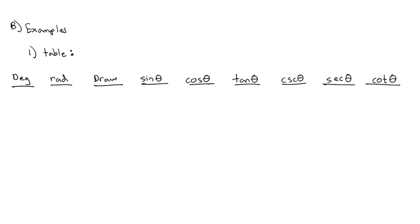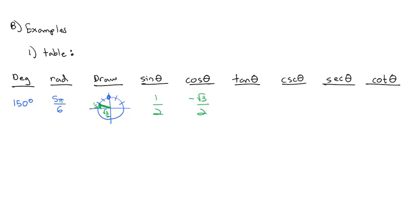Let's start with a 150-degree angle. Drawing that picture, 150 degrees is 30 less than 180, so it's in the second quadrant. The long side is root 3 over 2 and the short side is 1/2. In radians, counting around, that's 5π over 6. The sine is the y-coordinate, which is 1/2, and the cosine is the x-coordinate — negative root 3 over 2 since we're going to the left.